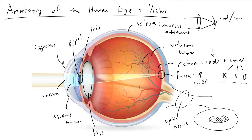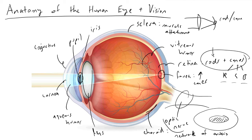The last key structure you should know about the human eye is something called the choroid. The choroid is right behind the retina and its job is to be a network of arteries, arterioles, venules, and veins which supply the retina with the nutrients it needs. These arteries will contain oxygen and glucose, which are needed by the rods and cones within the retina in order to actually transduce the visual signals that are coming in.